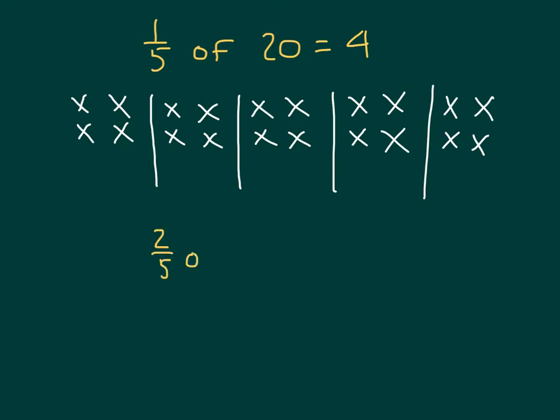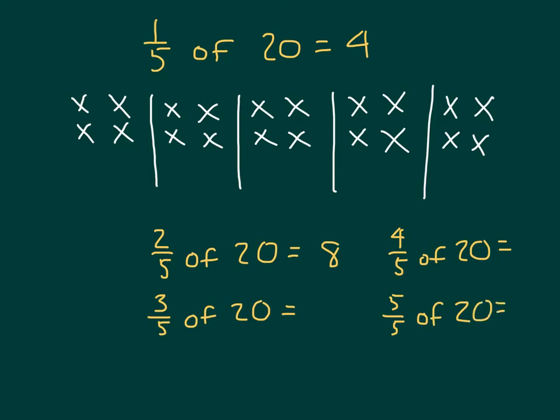Now if we were looking at 2/5 of 20, what would that be? 4 there, another 4, that would be 8. What would 3/5 of 20 be then? Can you figure that out? And 4/5 of 20? 5/5 of 20, or a whole of 20, of course would be 20. Did you say 12 for 3/5 of 20? 4, 8, 12. That's 3 groups, 3 fifths. 4/5 of 20 would be all of those there, which would be 16.